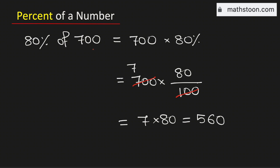Therefore, 80% of 700 is equal to 560, and this is our final answer.